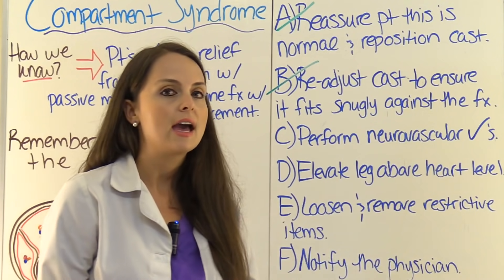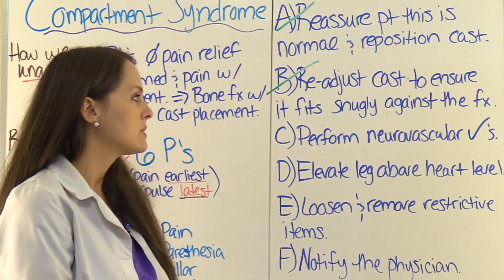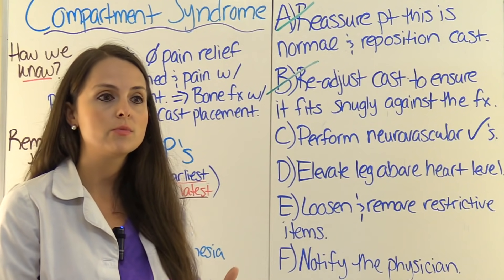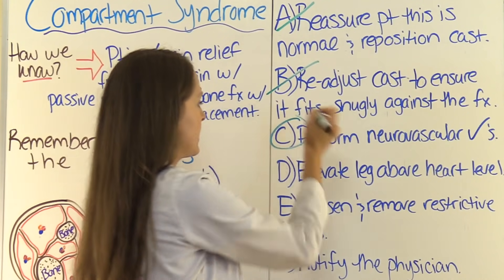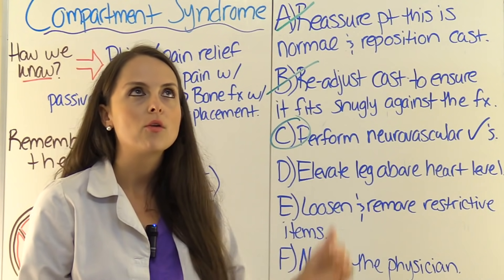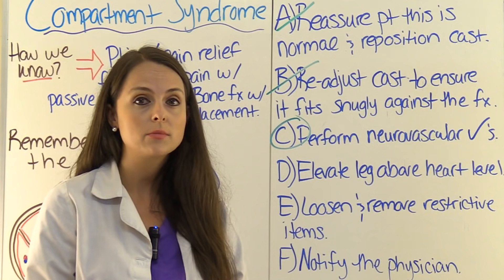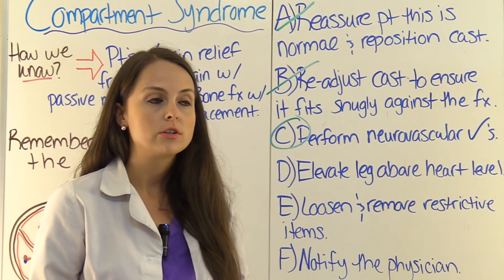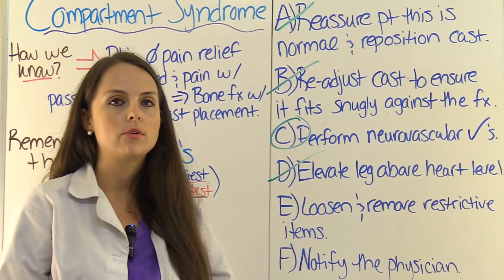Option C — perform neurovascular checks. Yes. This is where we check the six P's and monitor them regularly. We definitely want to assess how severe the situation is so that when we call the physician, we can report our findings and they can come see the patient and order what's needed. That is one of our answers. Option D — elevate the leg above heart level. On the surface this sounds good, but think about it. We have ischemia going on, so we want to maintain arterial pressure. Elevating the leg above heart level would decrease arterial pressure and cause even more ischemia. Keep the extremity at heart level — do not elevate it above.